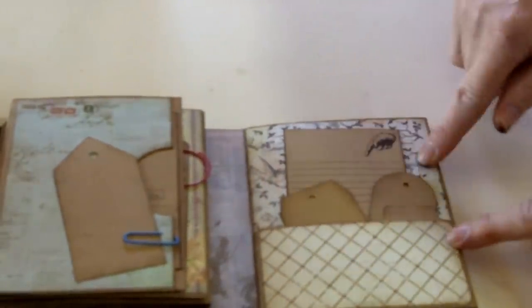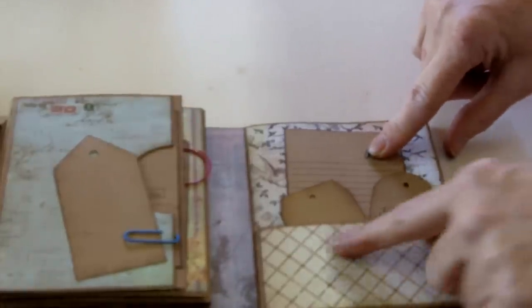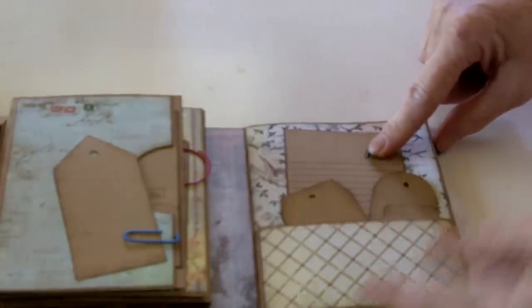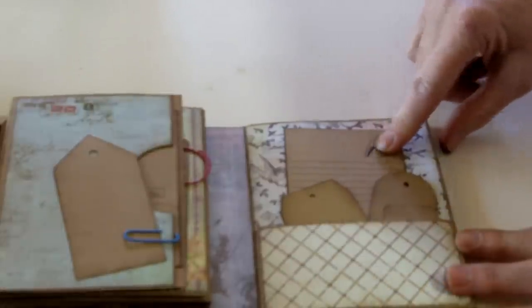When this closes up, this whole section folds this way, and this is the pocket that's on this back section here. I used a file folder die cut shape that I trimmed down to fit how I wanted the pocket to be back here. Fill the pocket with some of the different tags and journaling spots.